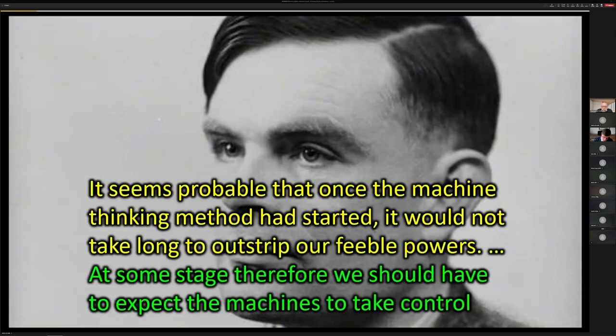So this is Alan Turing and his prediction for what happens if we succeed was at some stage, therefore, we should have to expect the machines to take control. And this is also a pretty obvious conclusion. If you make systems that are more intelligent, they're going to have more power than we do.